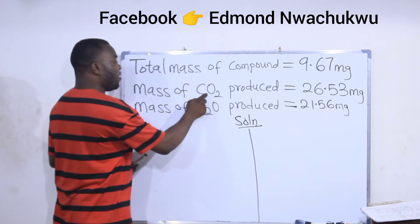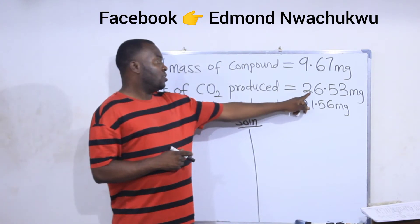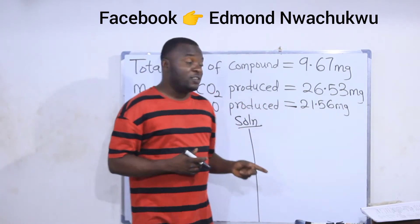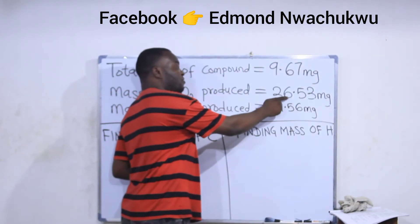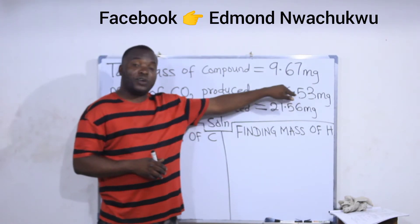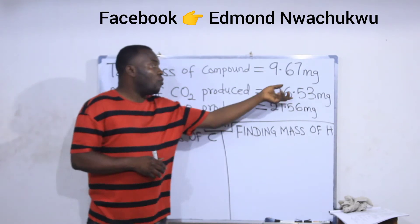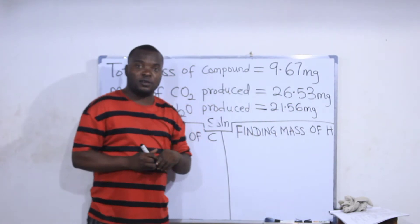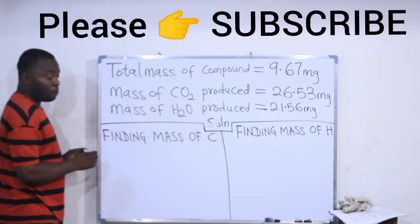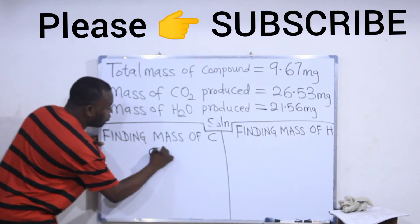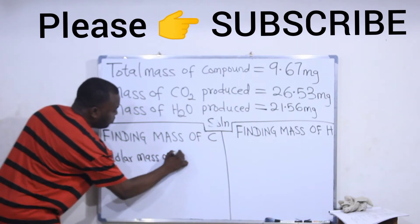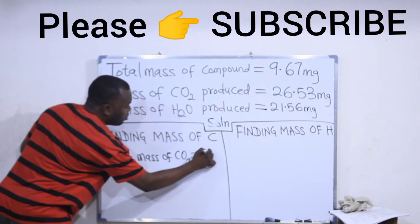To find the mass of carbon from CO2: the mass of CO2 produced during the process is 26.53 mg, which means inside 26.53 mg of CO2 there is a certain quantity of carbon. To find that quantity of carbon, we start with the molar mass of CO2. The molar mass of CO2 is the mass of carbon plus the mass of oxygen.